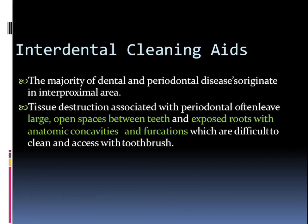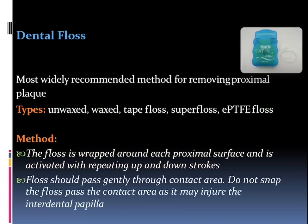Talking about interdental cleaning aids: the majority of dental and periodontal disease originates in the interproximal areas. The tissue destruction associated with periodontal disease often leaves large open spaces between the teeth and exposed roots with anatomic concavities and furcations, which are very difficult to clean with a toothbrush. So we go for dental floss, which is the most widely recommended method for removing proximal plaque.